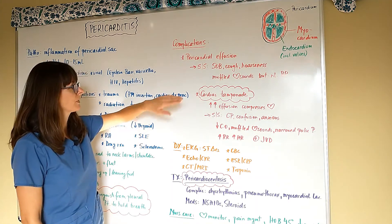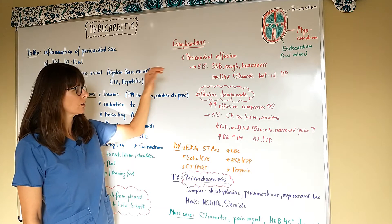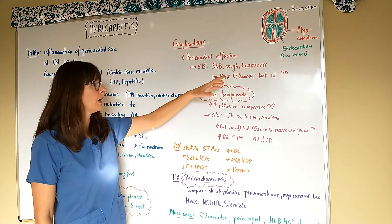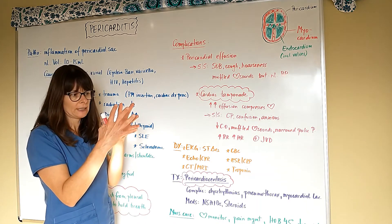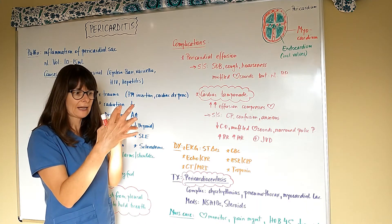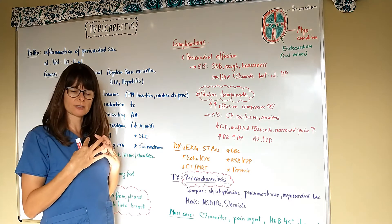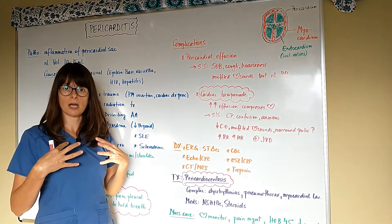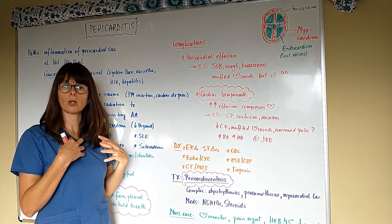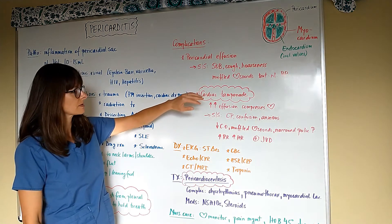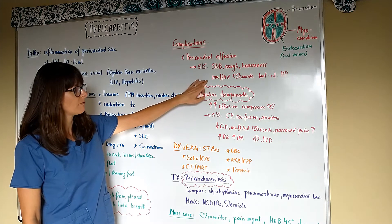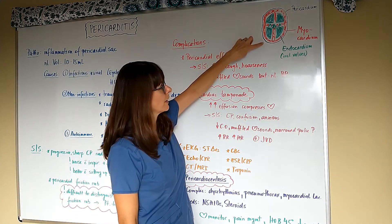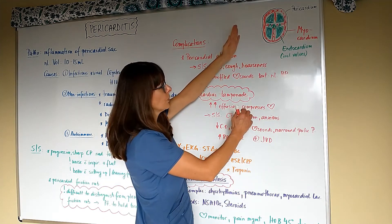And then the patient can be short of breath, complain of a cough or hoarseness, because this pericardial effusion now basically enlarges the pericardial sac, which can put pressure on surrounding structures in the chest such as the lungs and the trachea and maybe even all the way up into the voice box. And the patient then will have muffled heart sounds because now this pericardial sac, the small area around here, is filling up with fluid, which compresses the myocardium, and the sounds will not transmit as normal.